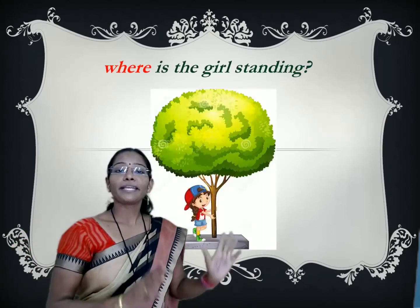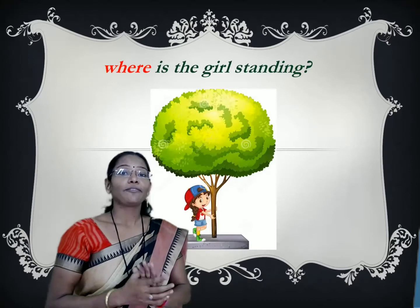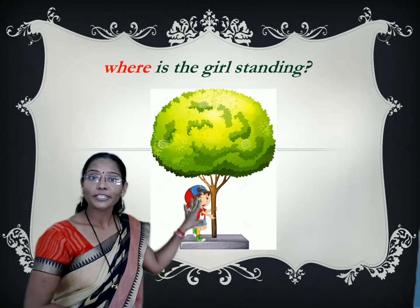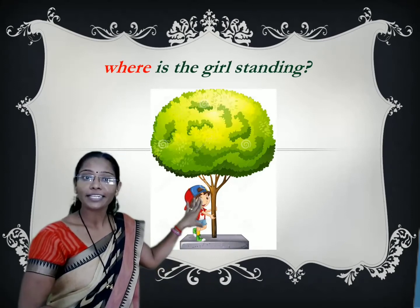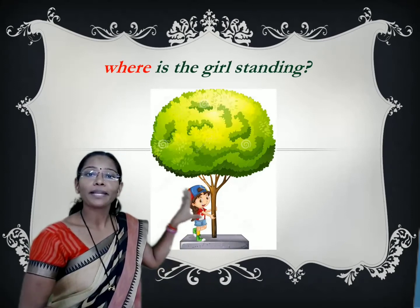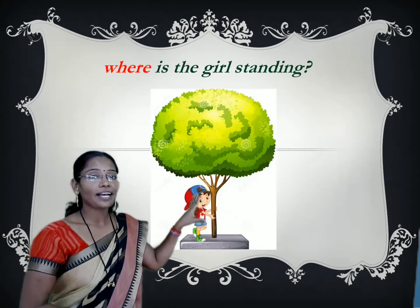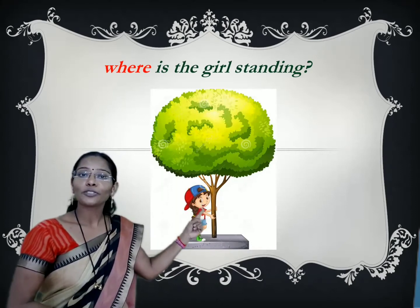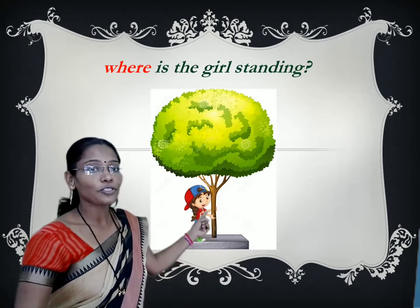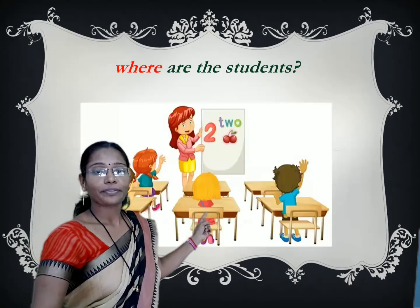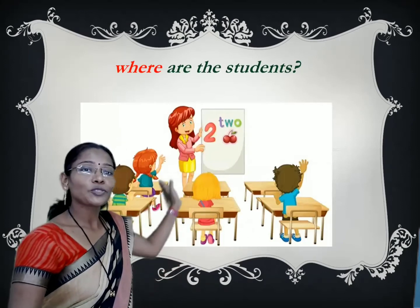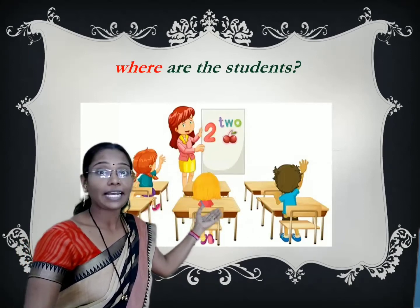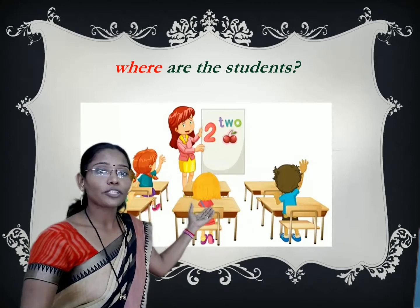So let us see some examples. I have taken the same examples here so that we can compare. Previously we asked about the person using the question word 'who' — 'who is standing here?' Now we want to ask the place of this girl, so we ask 'where is the girl standing?' Here we want to know the place of this girl, so we use 'where'. Next, 'where are the students?' — here also we want to know the place where the students are sitting, so we use the question word 'where'.